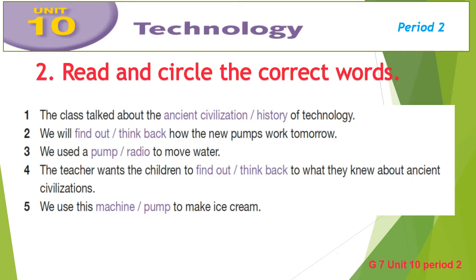1. The class talked about the ancient civilization or history of technology. 2. We will find out or think back how the new pumps work tomorrow. 3. We use the pump or radio to move water. 4. The teacher wants the children to find out or think back to what they knew about ancient civilizations. 5. We use this machine or pump to make ice cream.